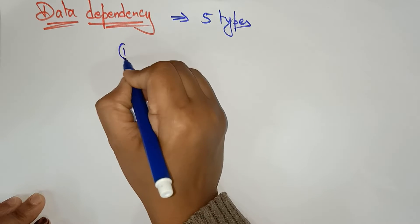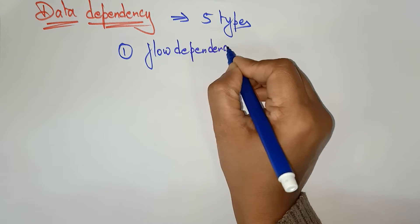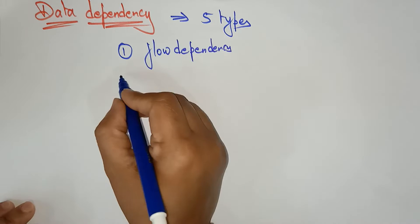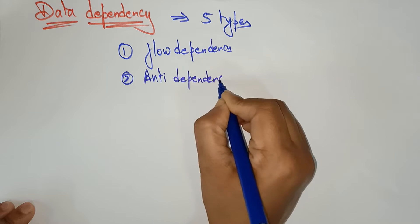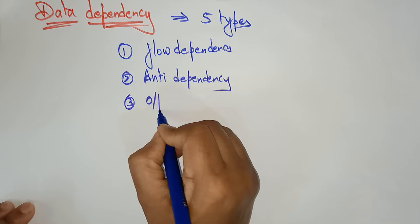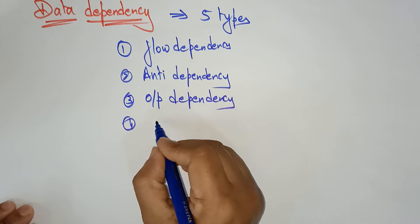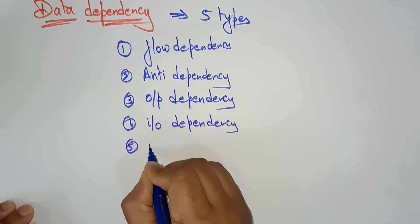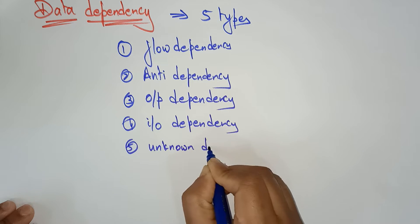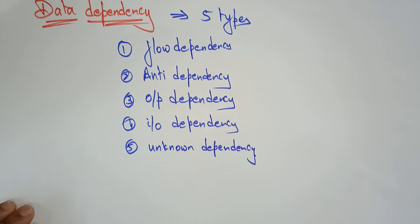The first one is flow dependency, the second one is anti-dependency, the third one is output dependency, the fourth is input-output dependency, and the fifth one is unknown dependency. These are the five different types of data dependency. Now let's look at each one with examples.